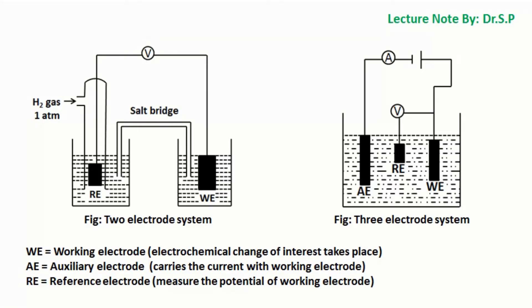The two-electrode system is better for developing an electrochemical cell because of its greater efficiency, whereas the three-electrode system is better for characterizing the working electrode. The two-electrode system can be used when IR drop is minimum, but the three-electrode system is preferred where IR drop is usually high.